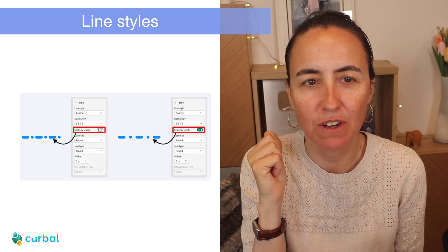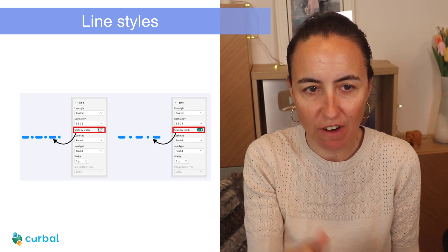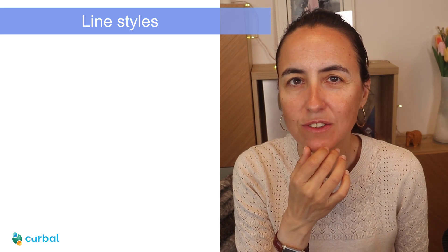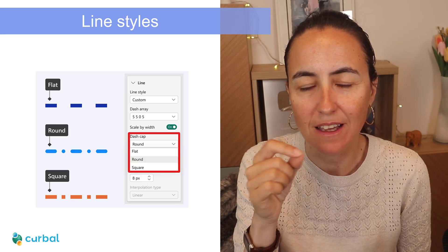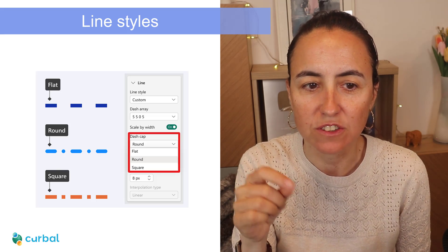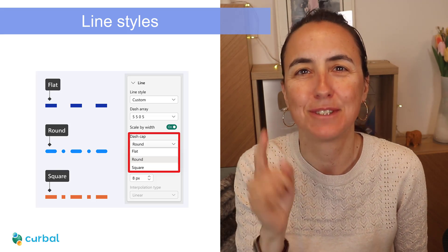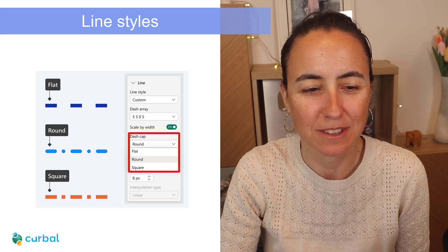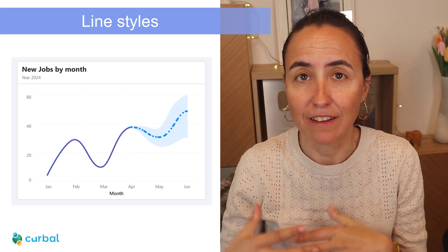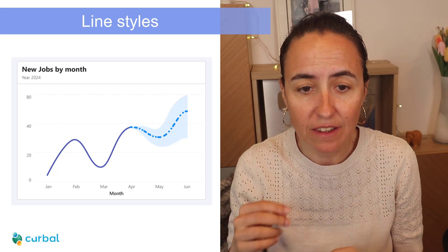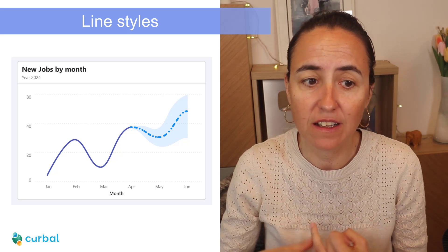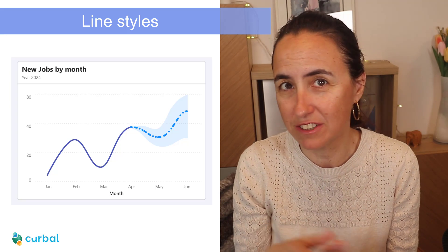They are also introducing auto scale for this custom pattern, so it will scale as you scale your canvas, which is quite nice. It will also apply to reference lines, forecast lines, and leader lines. For the custom lines, you also have the possibility to control the dash cap, so you can set it to squared, round, or flat — very nice options.